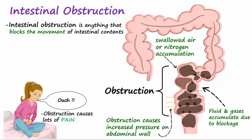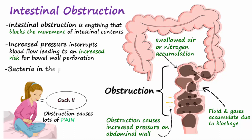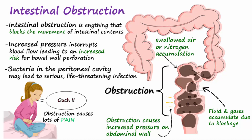Increased pressure on the intestinal wall will interrupt blood flow and possibly lead to ischemia and gangrenous changes that weaken the wall of the bowel, increasing risk for bowel perforation. A perforated bowel is a life-threatening condition because gut bacteria leak into the peritoneal cavity and a serious infection can develop.